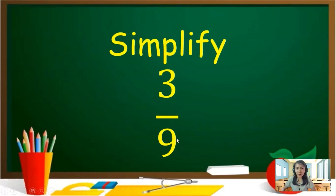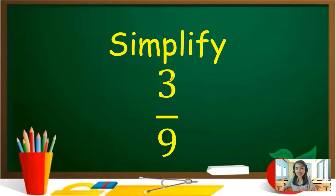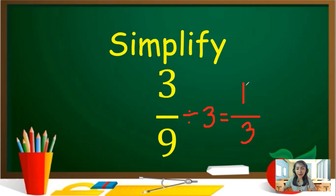Let us try to simplify our fraction here. We have 3 over 9. If you will just observe, the numerator is smaller than the denominator. Ang magagawa lang natin dito ay mag-simplify. First, you need to find the GCF of 3 and 9. Ang GCF ng 3 and 9 ay 3. So let us divide both numerator and denominator by 3. 3 divided by 3, ang answer ay 1. 9 divided by 3, ang answer ay 3. So the simplified form of 3 over 9 is 1 over 3.